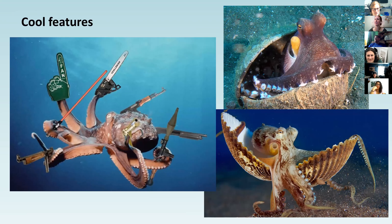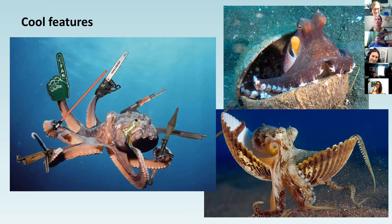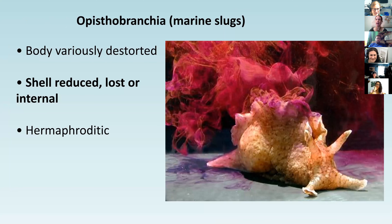The octopus is very unique - like cuttlefish, they can camouflage in a ton of crazy ways. They're also one of the few species that can use tools. They've been shown to use coconut shells and clam shells for camouflage. A lot of studies done on them in aquaria show they can solve puzzles and mazes and open bottles - very unique and cool creatures.